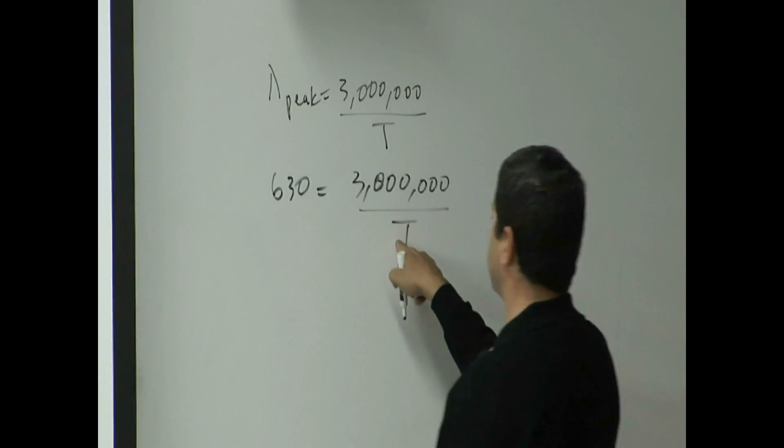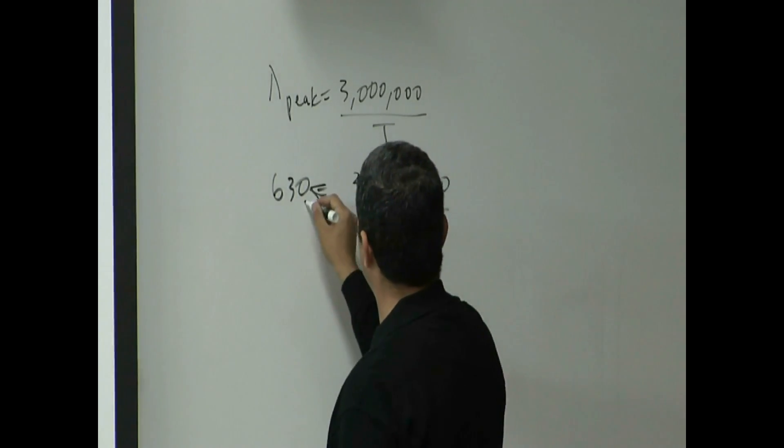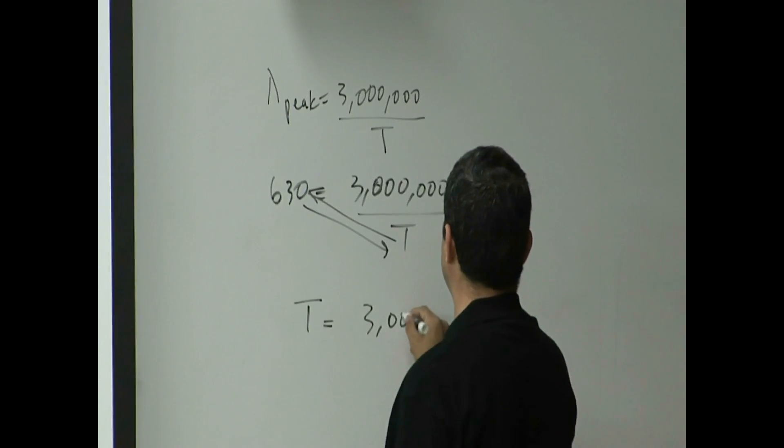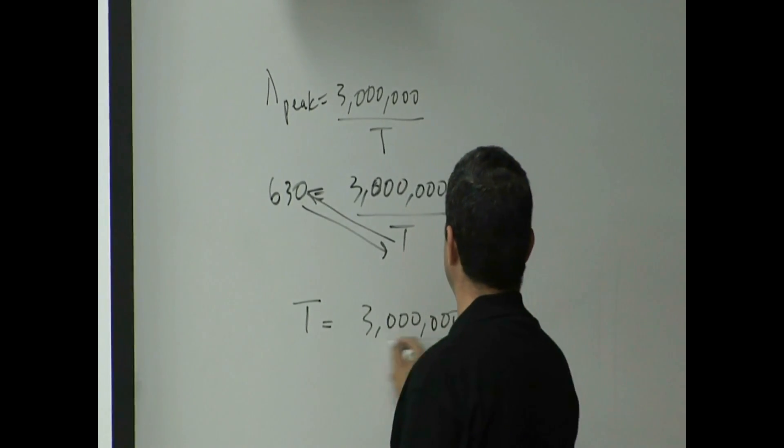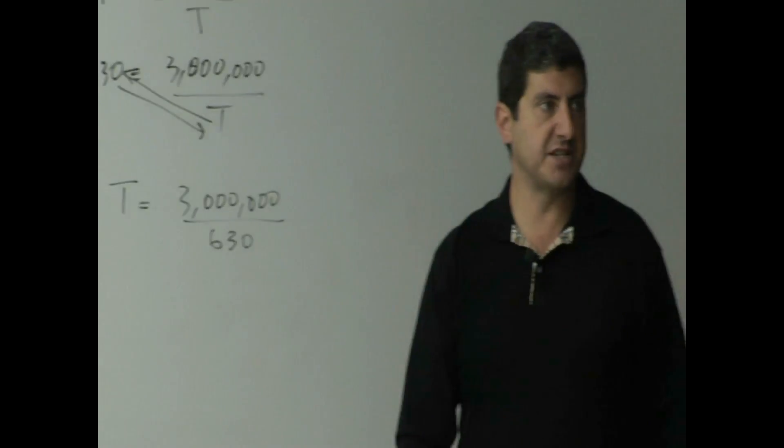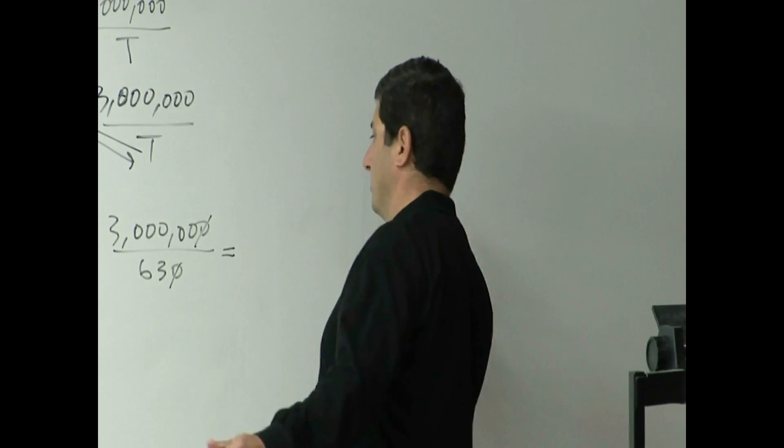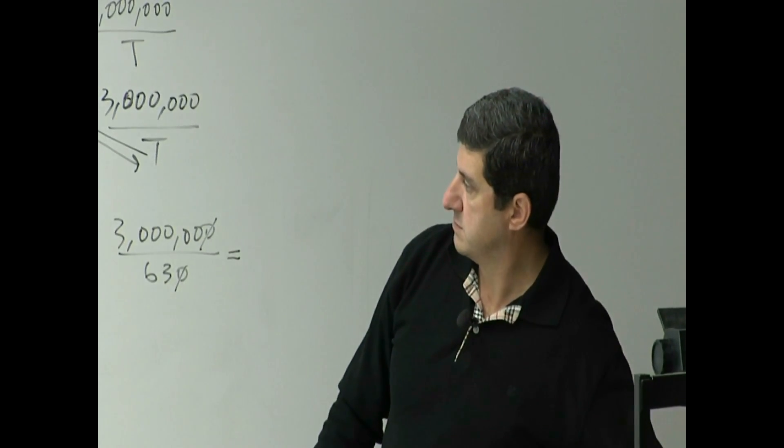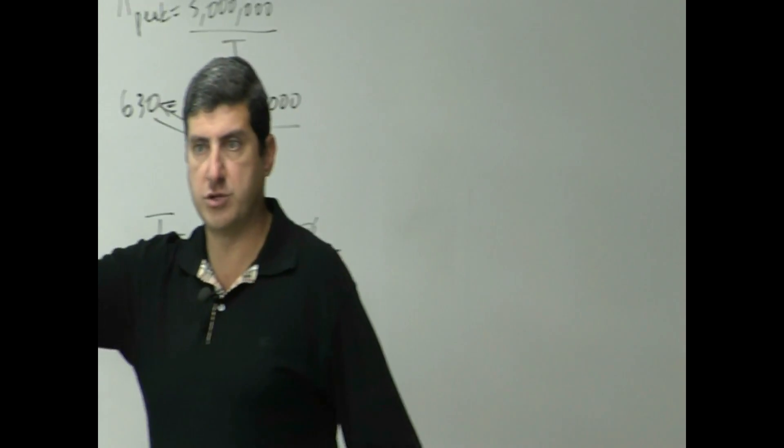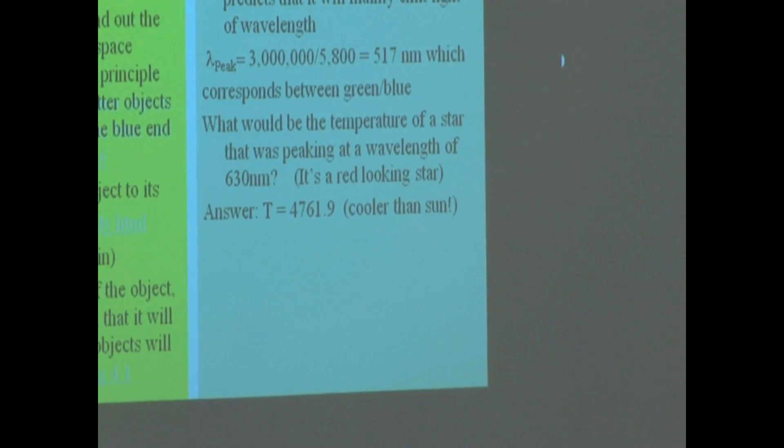So if I want to solve for T, how do I do it? I take the T over there. I bring the 630 here. It's called cross-multiply. So T, therefore, equals what? 3 million divided by 630, and whatever that gives you, the answer should come out, 4,761 kelvin. That's units of kelvin.